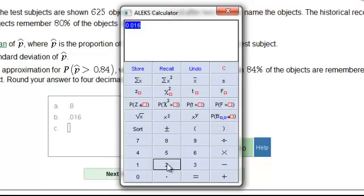And so now I'm going to create a z variable, which is 0.84 minus 0.80, or 0.04, divided by that 0.016, or 2.5.